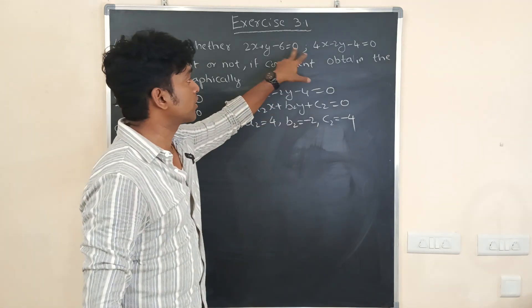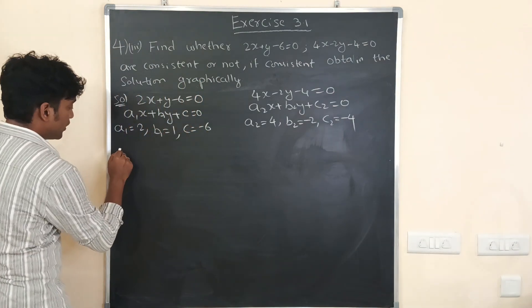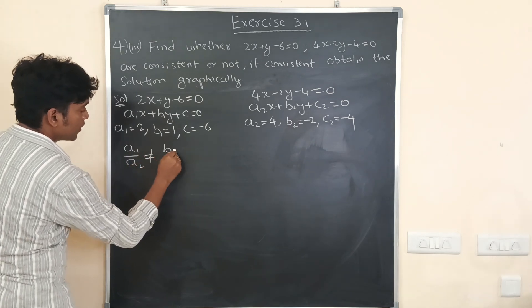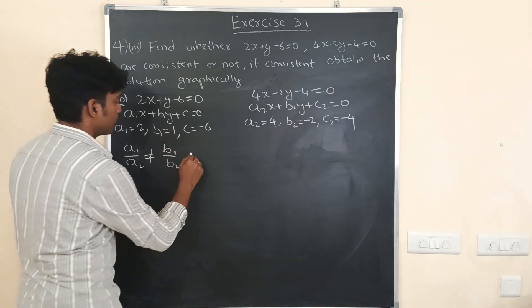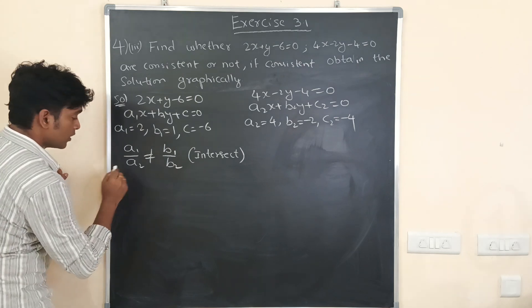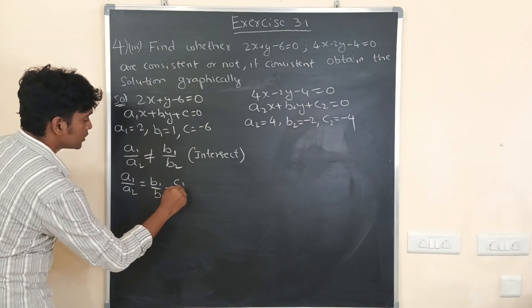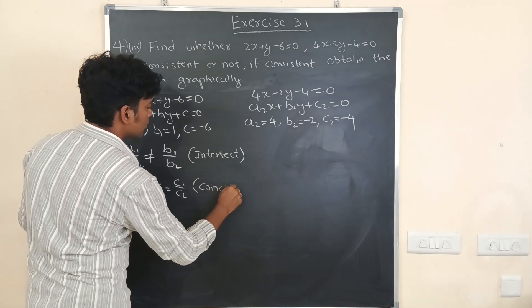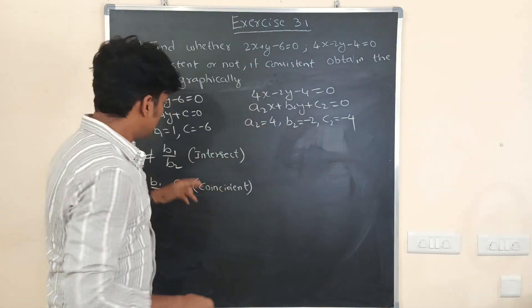The equations are consistent only when they are intersecting or coincident. For intersecting lines, the condition is a1/a2 is not equal to b1/b2. Another condition is a1/a2 = b1/b2 = c1/c2, which is when the lines are coincident. For both these conditions, the lines are consistent.